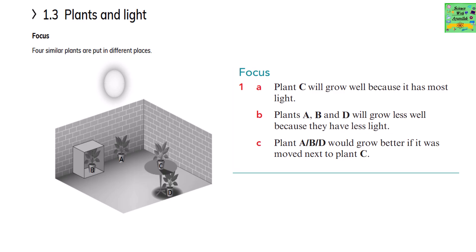Plants and Light. Four similar plants are put in different places. A, B, C and D. Plant C will grow well because it has the most light. Plant A, B and D will grow less well because they have less light. Plant A, B and D would grow better if it was moved next to plant C.